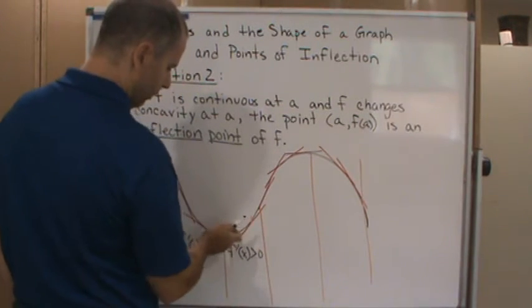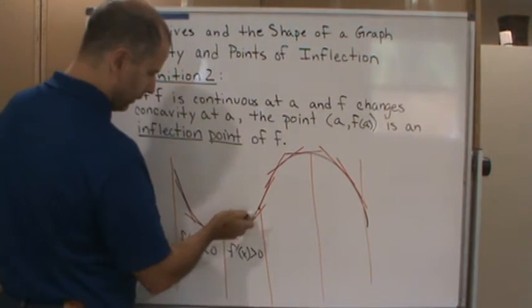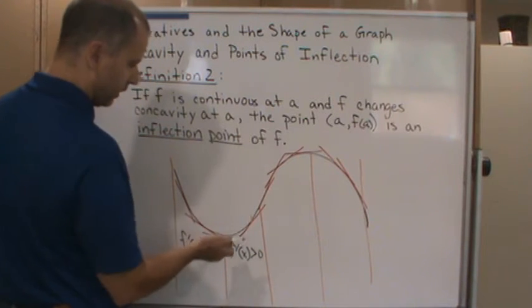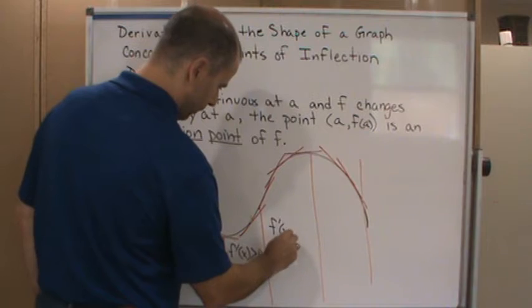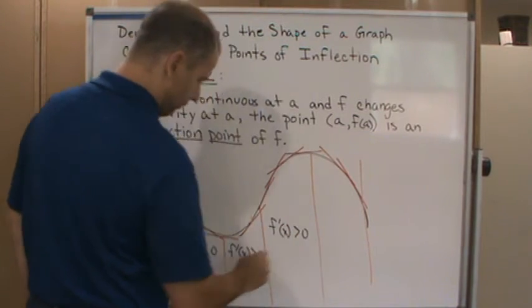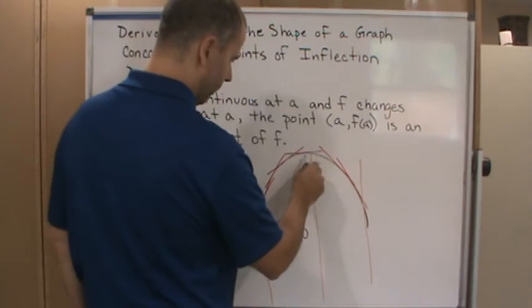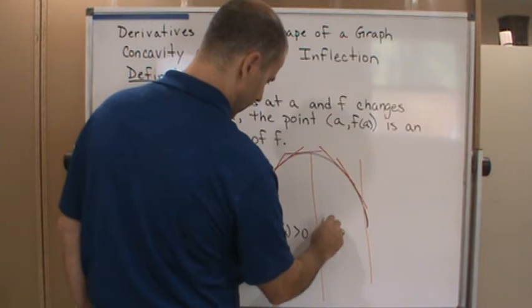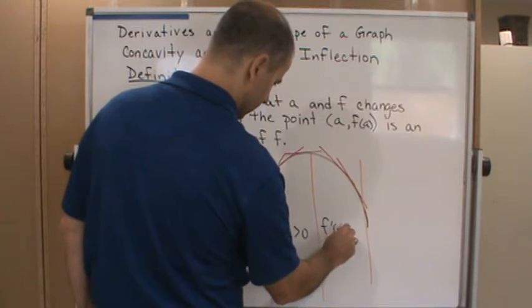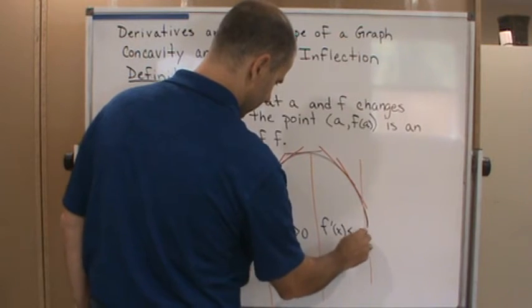Now notice that the tangent lines still have a positive slope, so here f prime of x is still positive. And then here right at the maximum it's going to change direction, so now f prime of x is going back to negative.